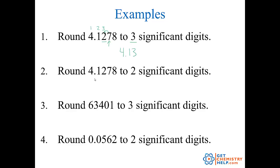How about 4.1278 rounded to two significant digits? I keep the first two significant digits. The first non-significant digit is this two, which is less than five, so I round down and drop all the non-significant digits. It becomes 4.1.